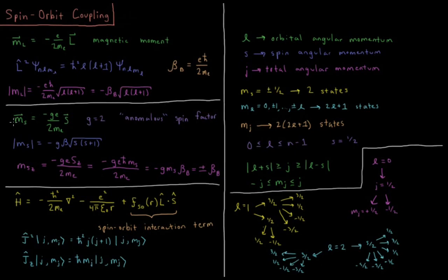We would get a magnetic dipole moment vector from the spin angular momentum as well. That's equal to negative g times the charge of the electron over 2 times mass of the electron, times the spin angular momentum vector. This factor g is just equal to 2 — that's called the anomalous spin factor. You get an extra factor of 2 in this magnetic dipole moment relative to the orbital one.